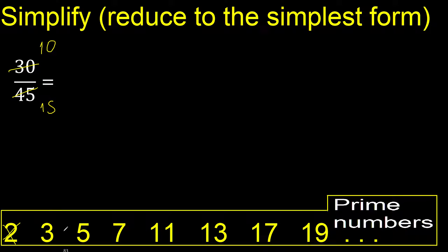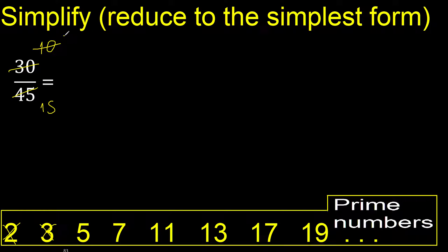10 and 15 cannot be divided by 3 again because 10 cannot be divided by 3 — therefore no. Divided by 5 — yes. 10 divided by 5 is 2, and 15 divided by 5 is 3.